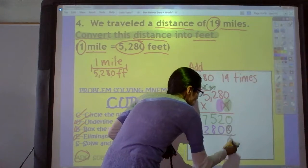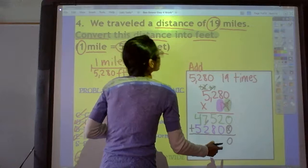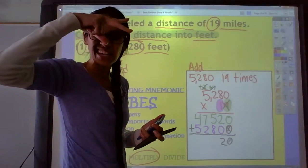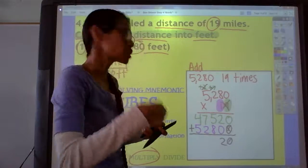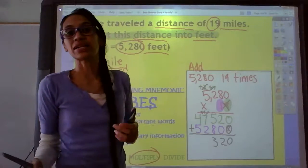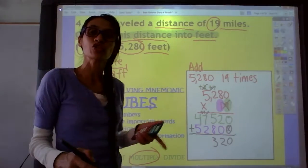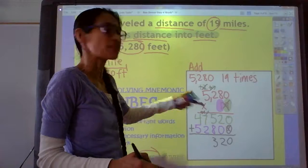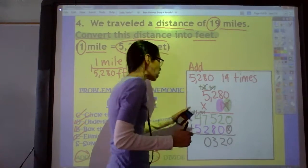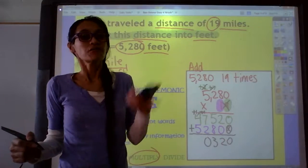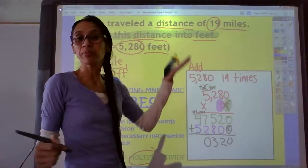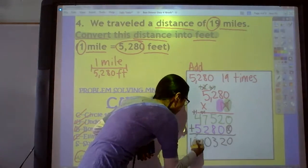0 plus 0 is 0. 2 plus 0 is 2. 5 plus 8. Start with 8 in your mind. 8, 9, 10, 11, 12, 13. Write the 3 plus 1 up top. 1 plus 7 is 8, plus 2 is 10, or 7 and 2 is 9, plus 1 is 10. Write the 0 plus 1 up top. 1 and 4 makes 5, and then 5 more right there is a 10, or 5 and 4 is 9, plus 1 is 10.